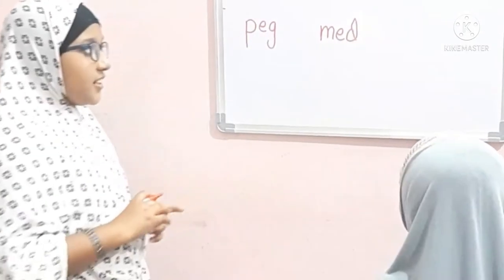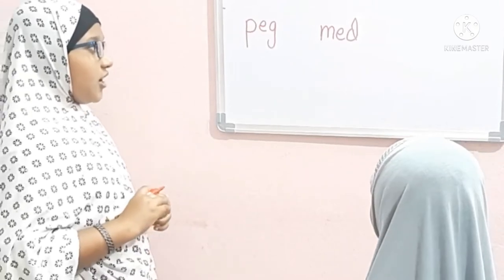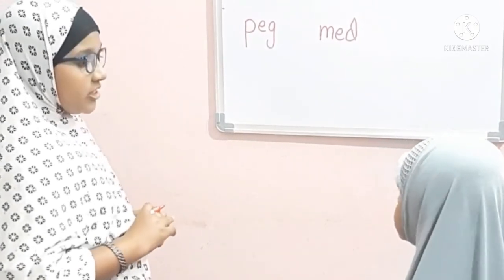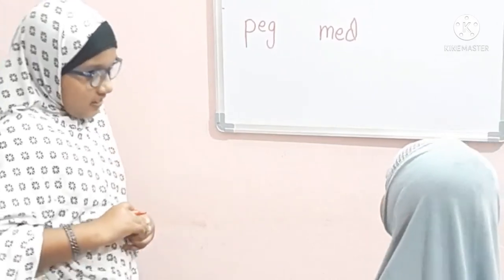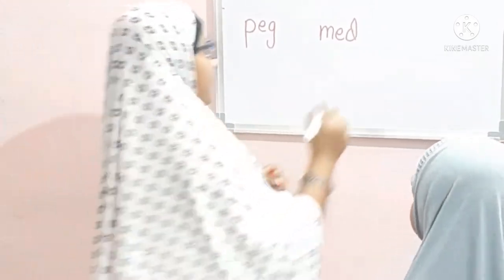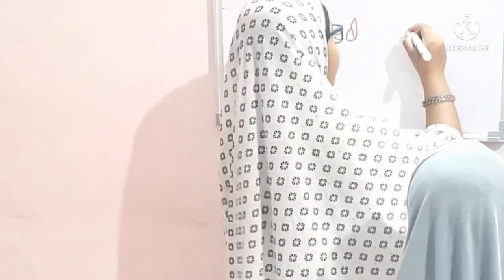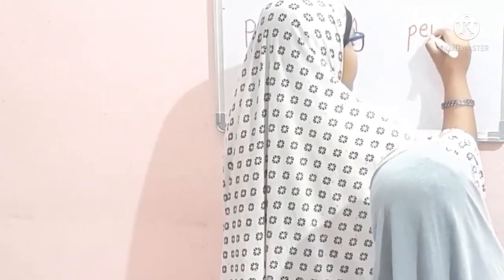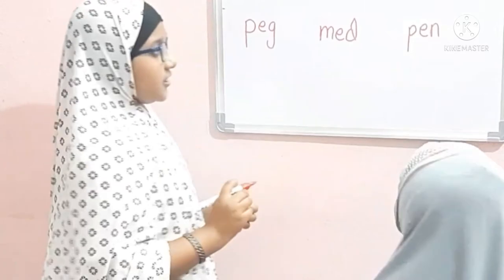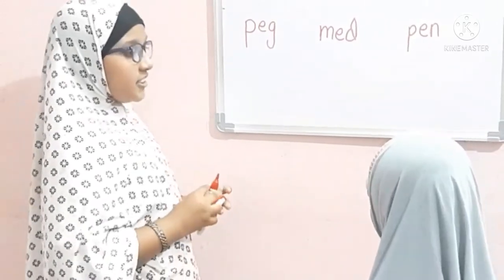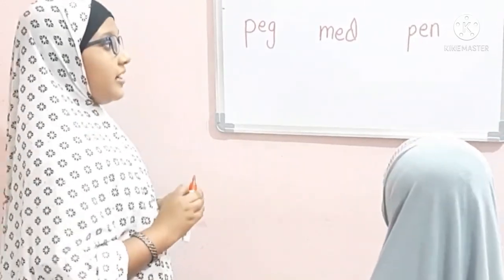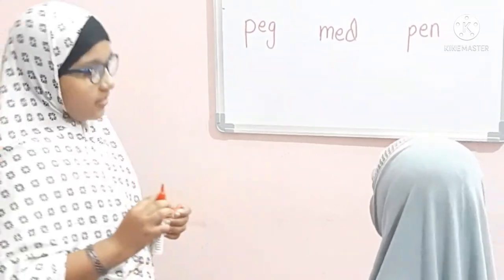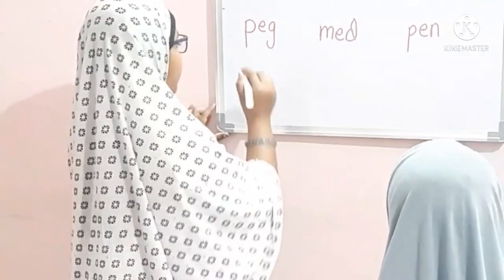What is this Aliza? M-E-D. What is the sound of M? Ma. And what is the cluster? E-D. Ma + ED — 'med'. What is the E-N cluster? What is the sound of P? Pa. And what is the cluster? E-N. Pa + EN — 'pen'. Very good.